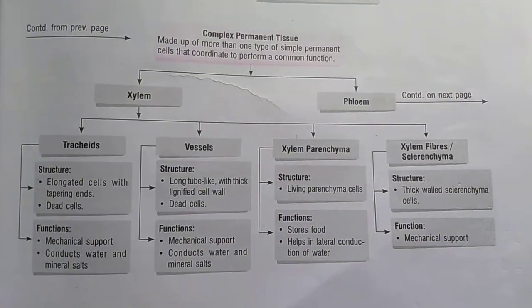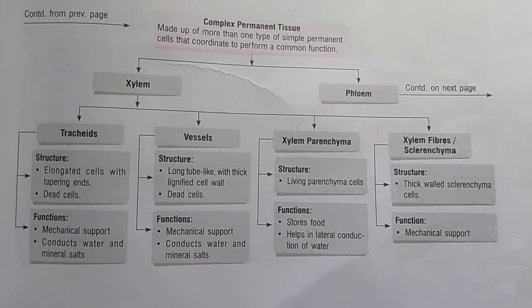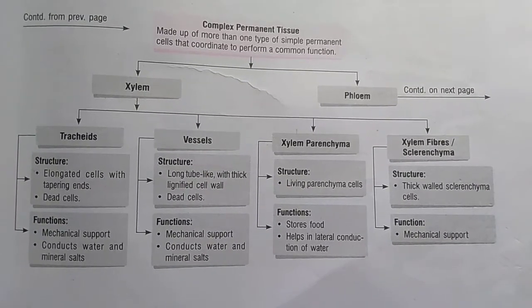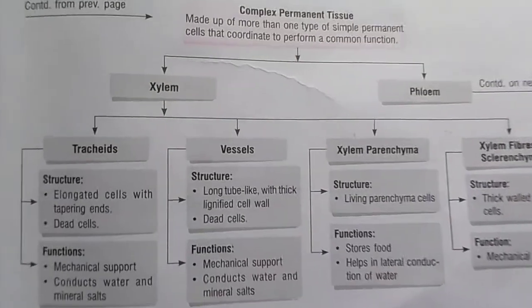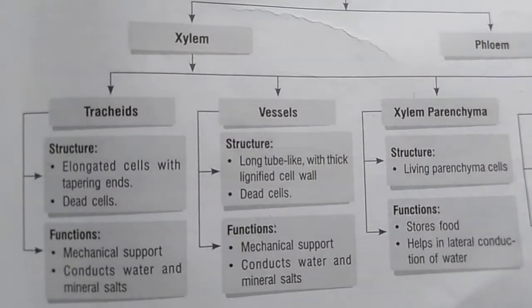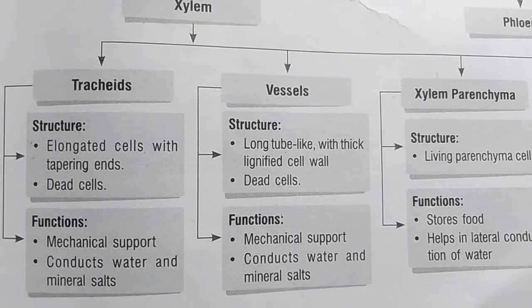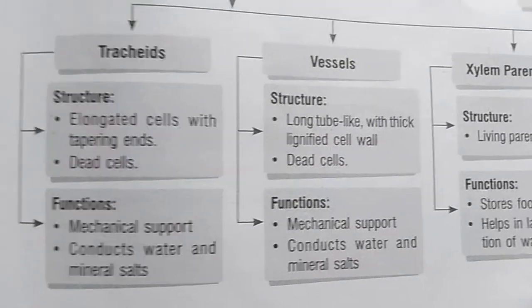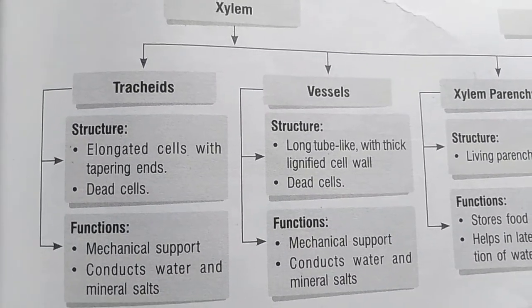Xylem consists of four parts: tracheids, vessels, xylem parenchyma, and xylem fibers or sclerenchyma. Tracheids are elongated cells with tapering ends — the ends are pointed at both corners. The function of tracheids is to provide mechanical support and to conduct water and minerals.